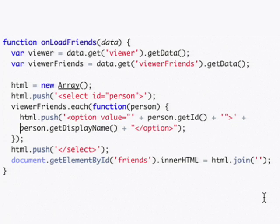Next, we modify our onLoadFriends function so that instead of listing the friends on the page, it creates a menu out of them so that we can pick one friend.